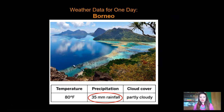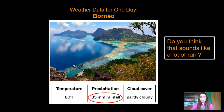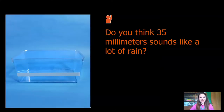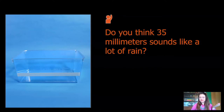Now let's look at the precipitation for Borneo. It says 35 millimeters of rainfall. Do you think that sounds like a lot of rain? It's kind of hard to visualize what 35 millimeters of rain looks like. I'm going to show you using a demonstration about how much 35 millimeters of rain is.